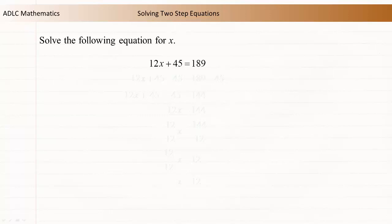Solving two-step equations involves applying more than one opposite operation. Each opposite operation is applied to both sides of the equation to isolate the variable. Let's solve this equation for x: 12x + 45 = 189.